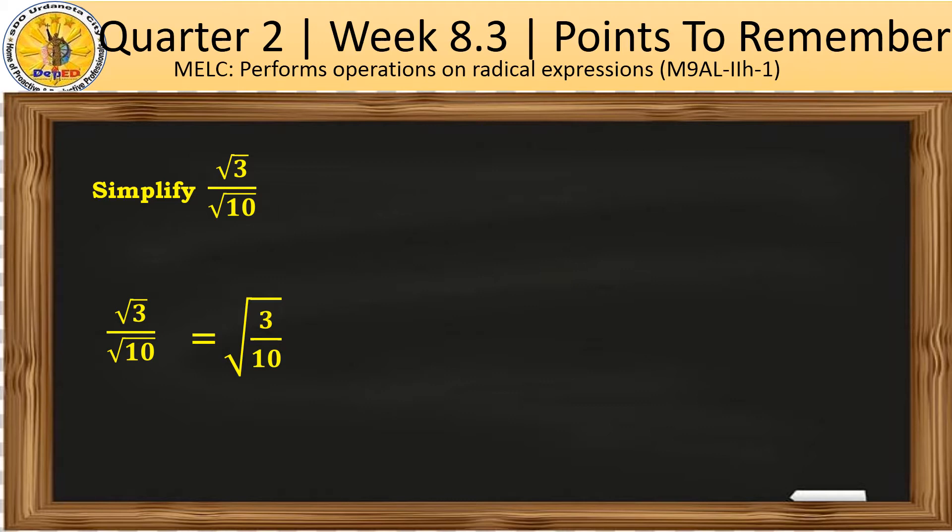To rationalize the denominator, we will multiply the original fraction by a certain number, such that after simplification, the denominator no longer contains radicals. Here, we will multiply 3 over 10 by 10 over 10. After performing multiplication, we will end up with the square root of 30 over 100.